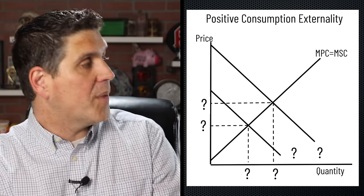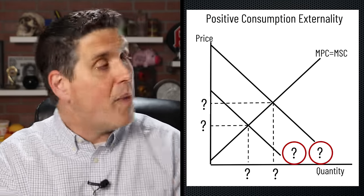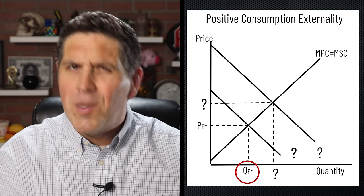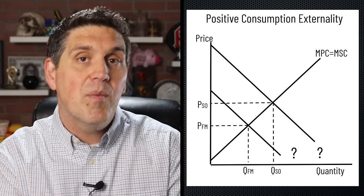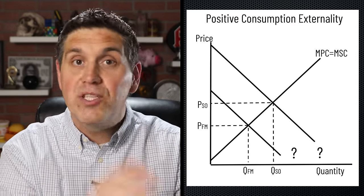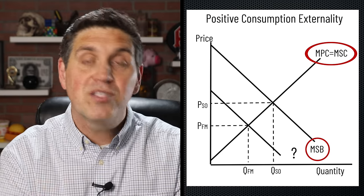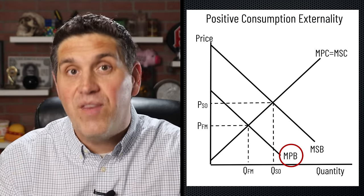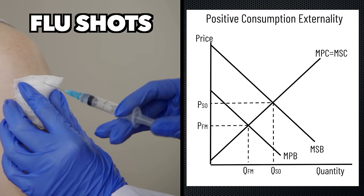Now let's look at a positive consumption externality. A consumption externality has two benefit curves, and the quantity on the left is going to be the free market quantity because in a positive externality we're producing too little — we're not producing enough. So the other quantity must be the socially optimal quantity. Since that's always where the marginal social benefit hits the marginal social cost, the other curve must be the marginal private benefit. That's the correct graph for a positive consumption externality.